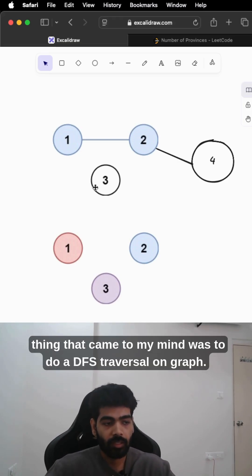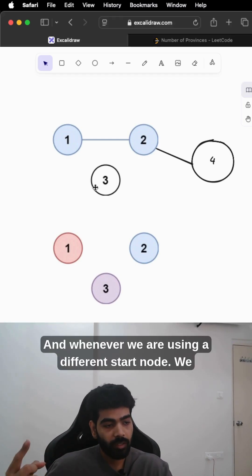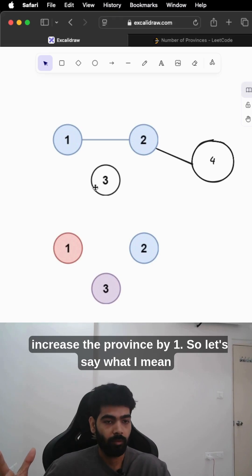The first thing that came to my mind was to do a DFS traversal on the graph. Whenever we use a different start node, we increase the province count by one.